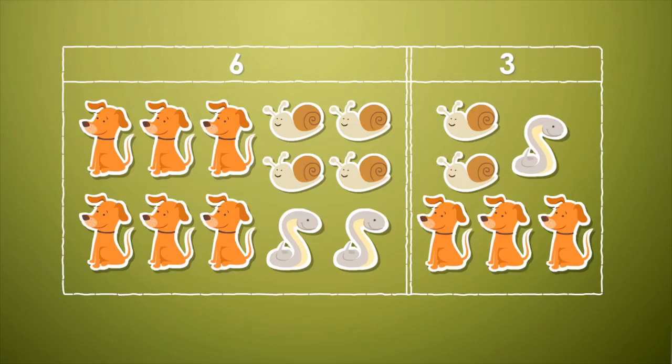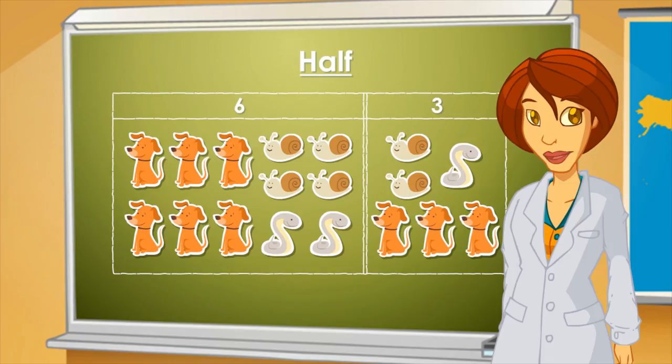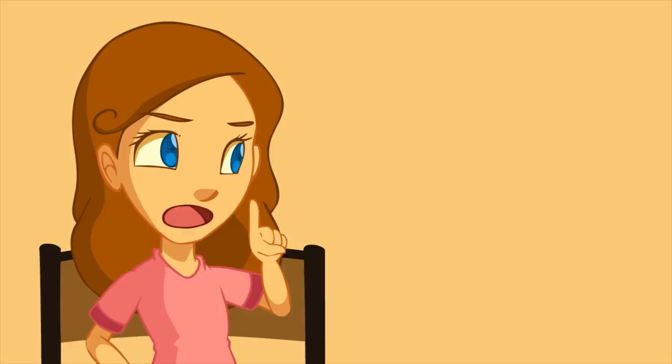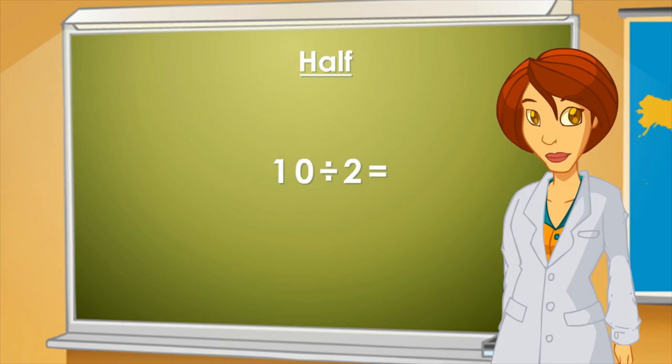Please notice that in this chart, in the second column, there are half of the animals compared to the first column. To calculate half of a number, you must split that number into two equal parts. Half of eight is four, because if I split eight into two halves, each half equals four. How much is half of ten, Matt? Five, because if I split ten into two halves, each half equals five.